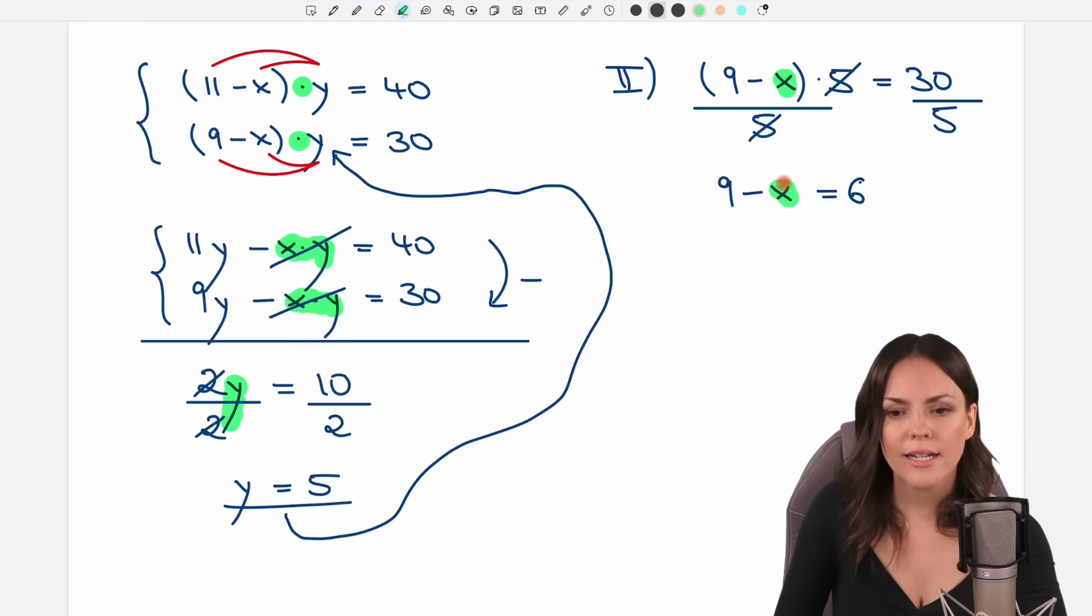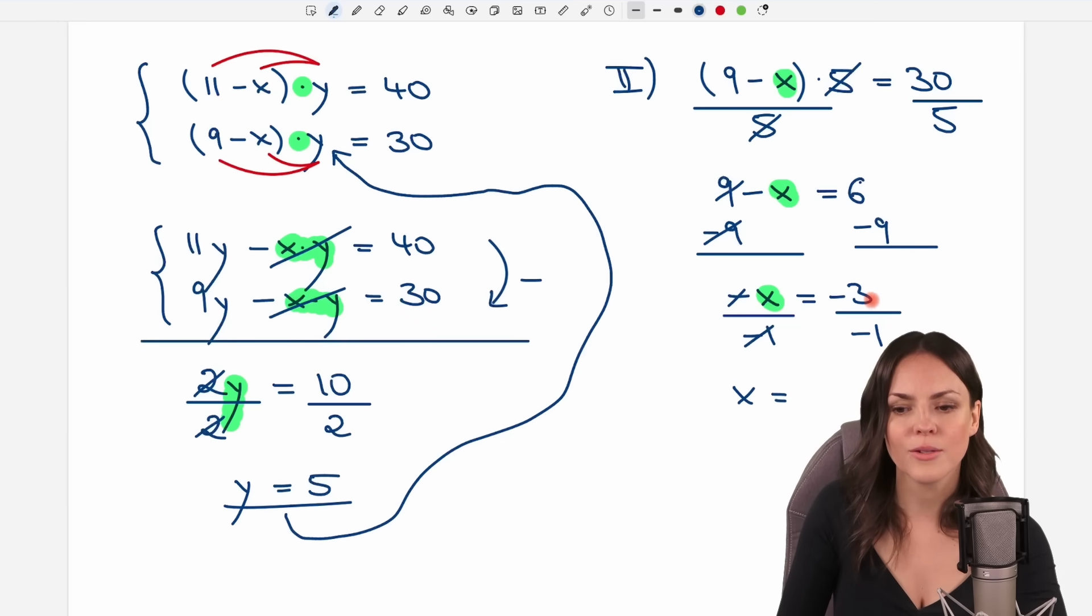To solve for x we can subtract the 9 on both sides of the equation so that this cancels out here and minus x is left and here 6 minus 9 equals negative 3. We're almost done, we just have to get rid of the minus here so we divide by negative 1. This cancels out and only x is left and negative 3 over negative 1 equals 3.